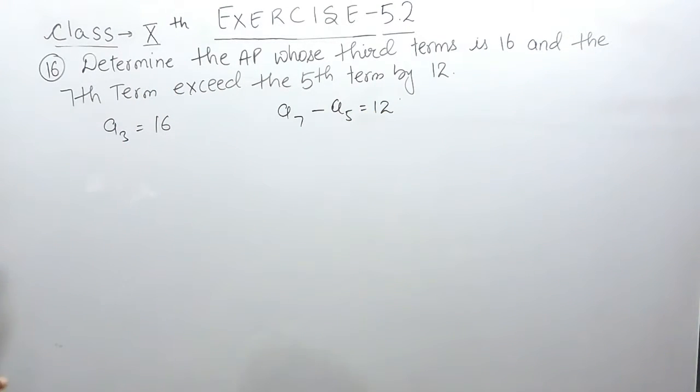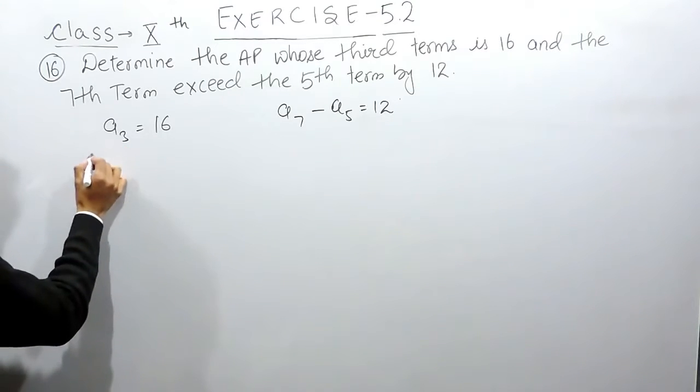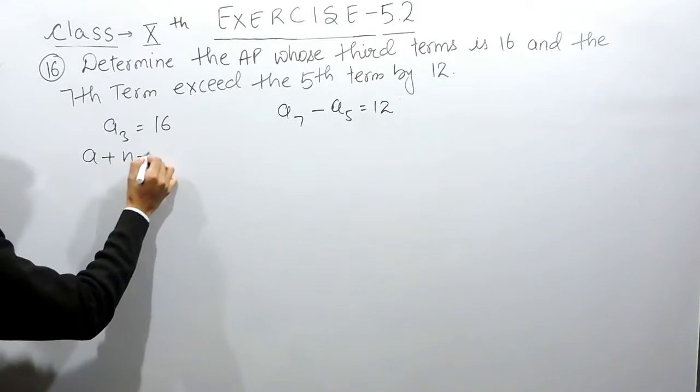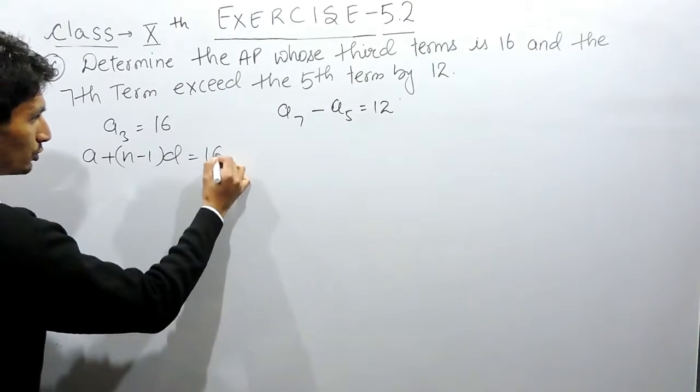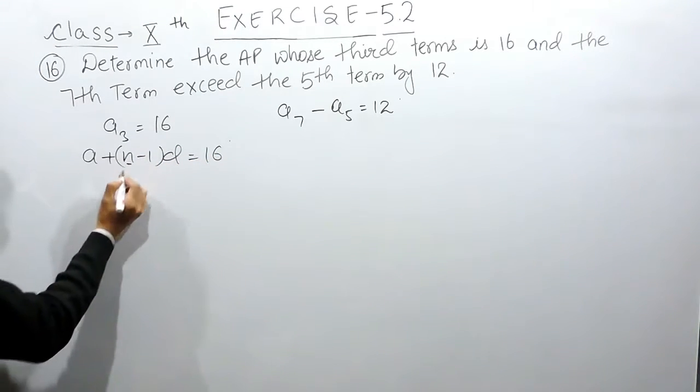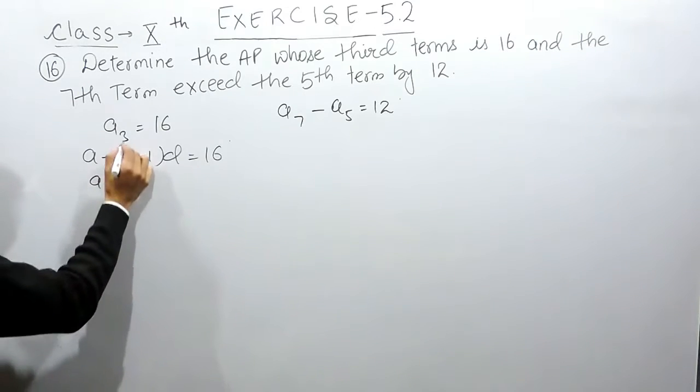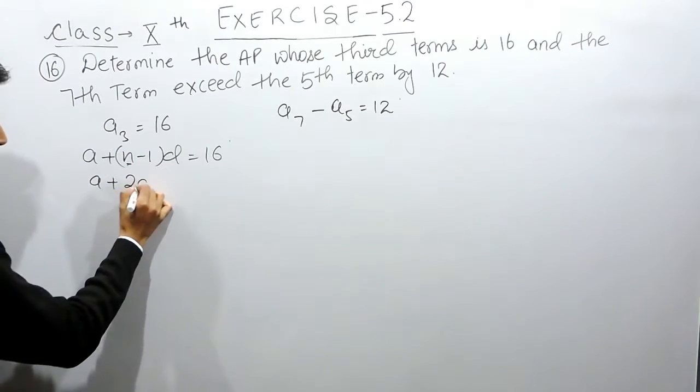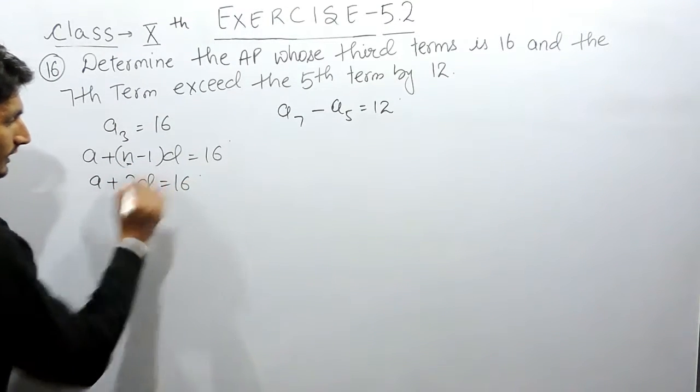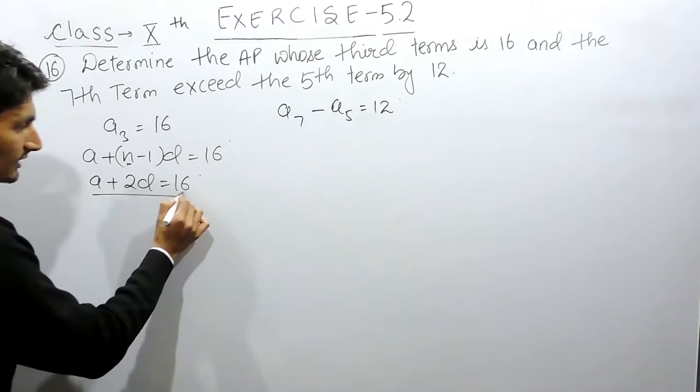Now how to find the third term? We have a formula A plus N minus 1 into D must be equal to 16. Here the number is the third term, so 3 minus 1 will be 2D. So this should be the first equation.